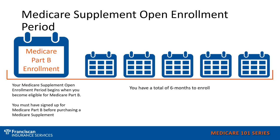The Medicare Supplement open enrollment period revolves around when you take your Medicare Part B. We will discuss later about your options if you are still working. However, I want to note that your open enrollment to get into any Medicare supplement without health underwriting starts when you take your Medicare Part B. If you are still working, you may want to wait to take your Medicare Part B in order to maintain this enrollment period. Once you are outside the six-month window of taking your Medicare Part B, you may have to go through health underwriting if you do not qualify for a special enrollment period. The Medicare Supplement open enrollment period starts when you take your Medicare Part B and continues for six months past that.